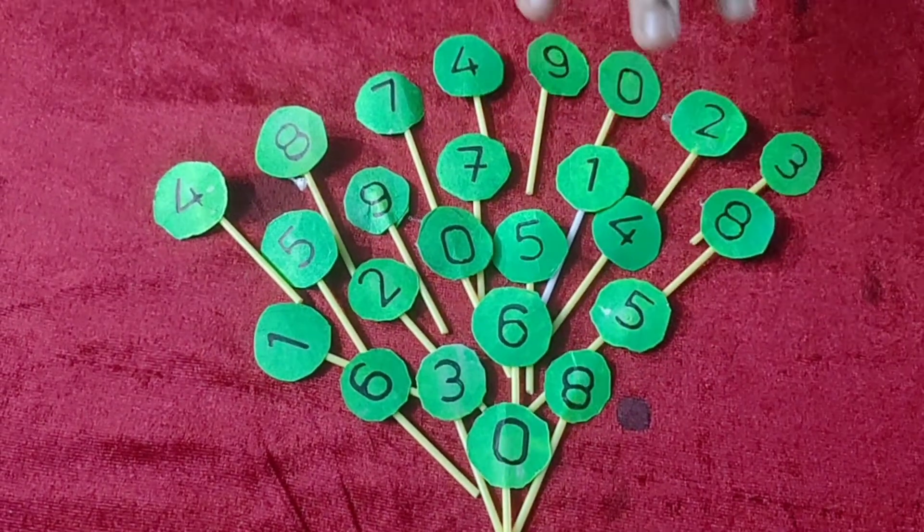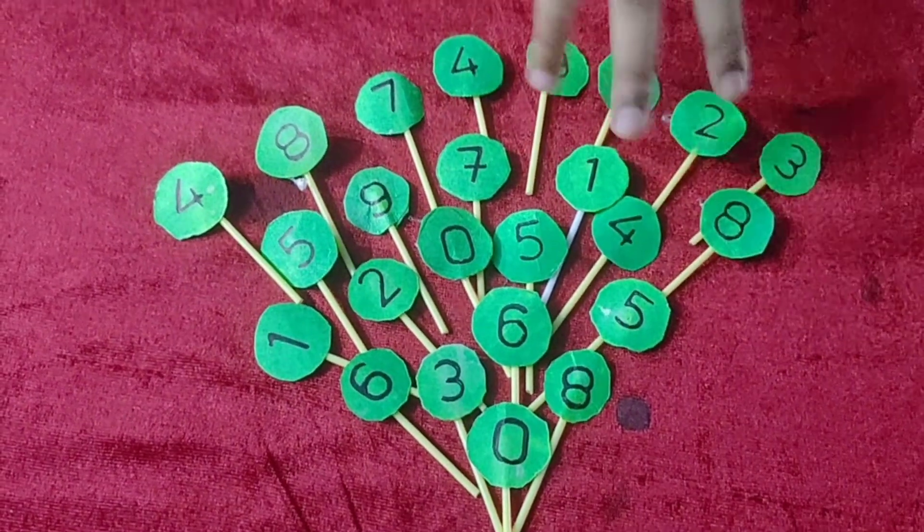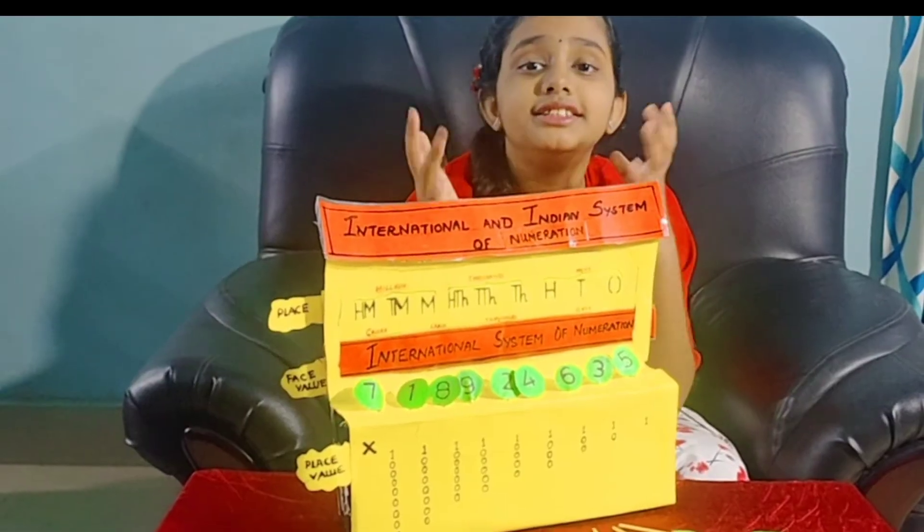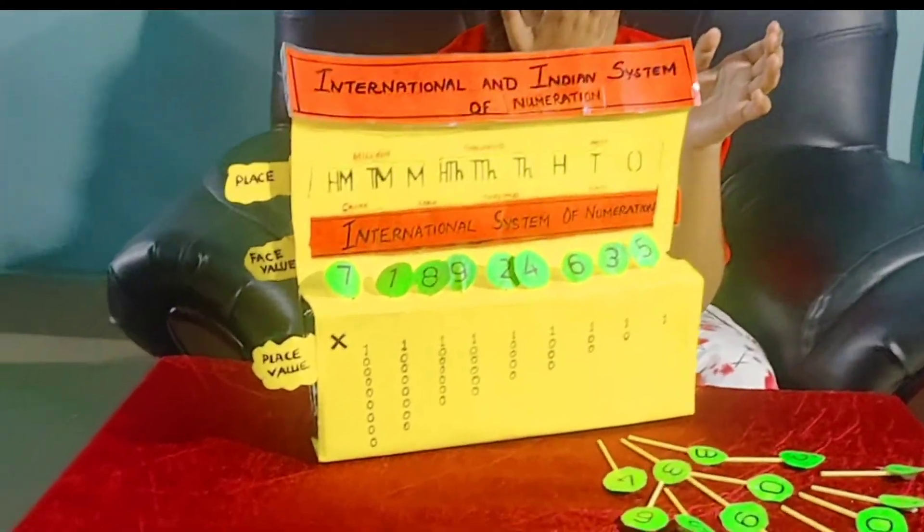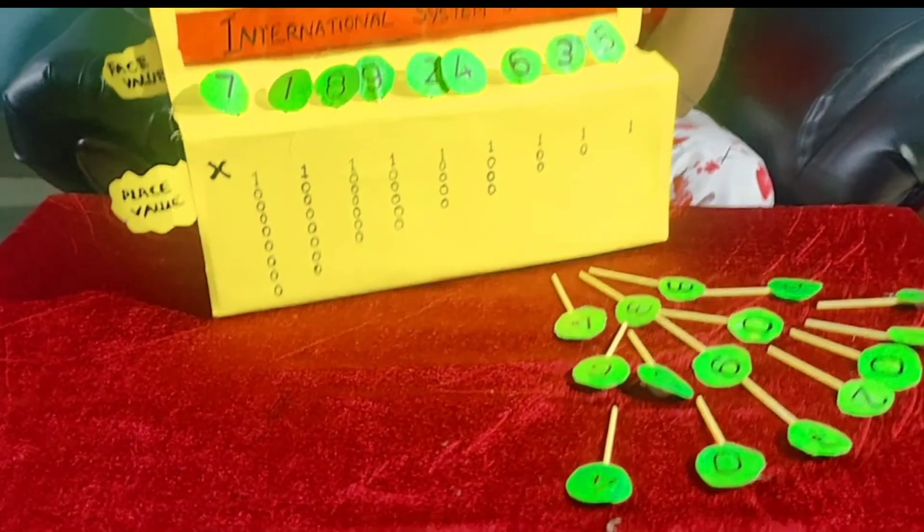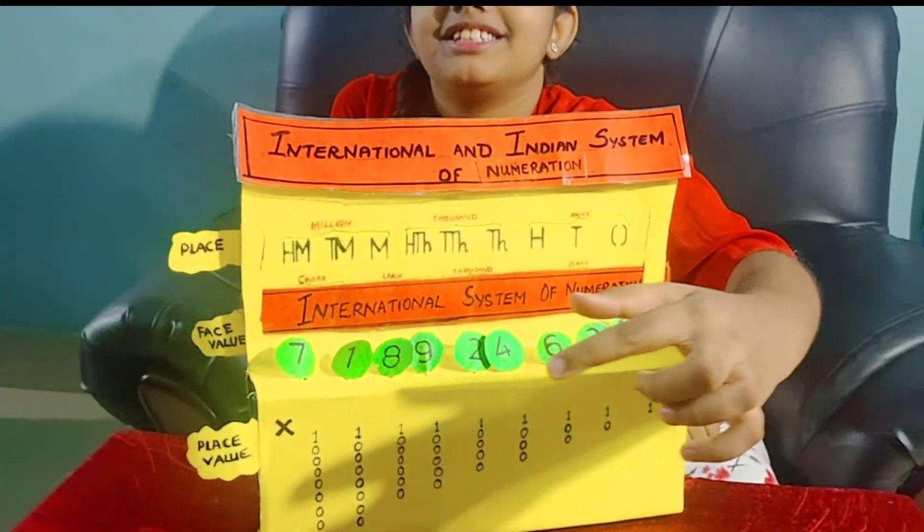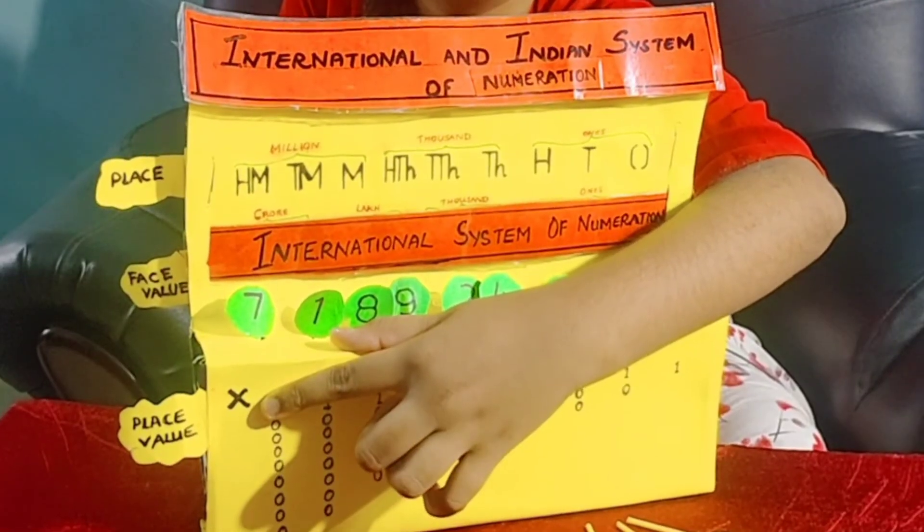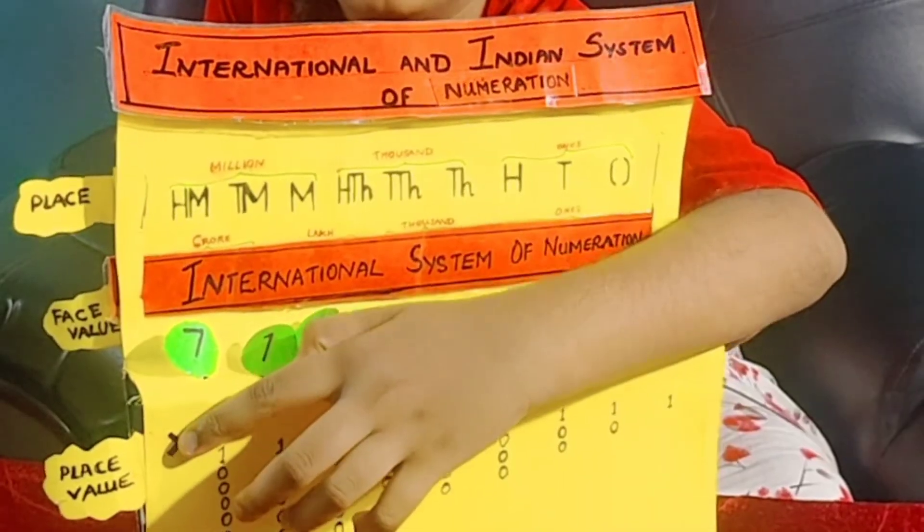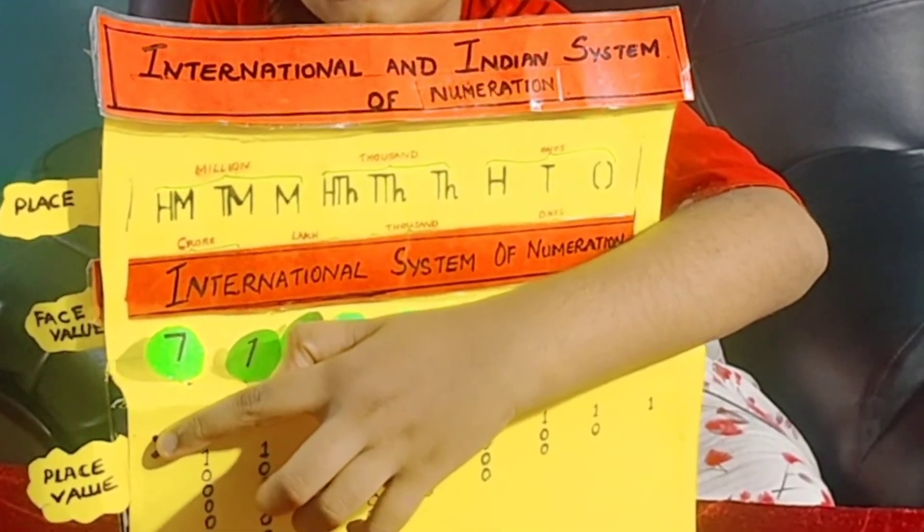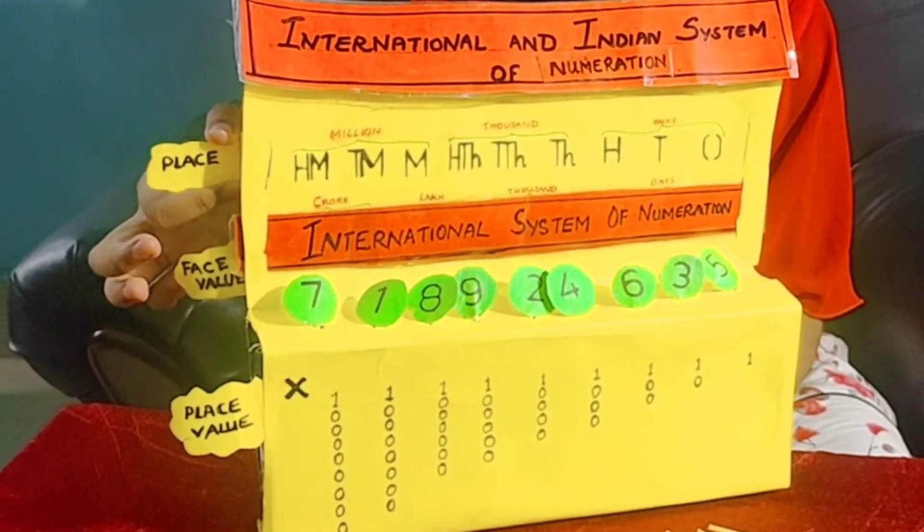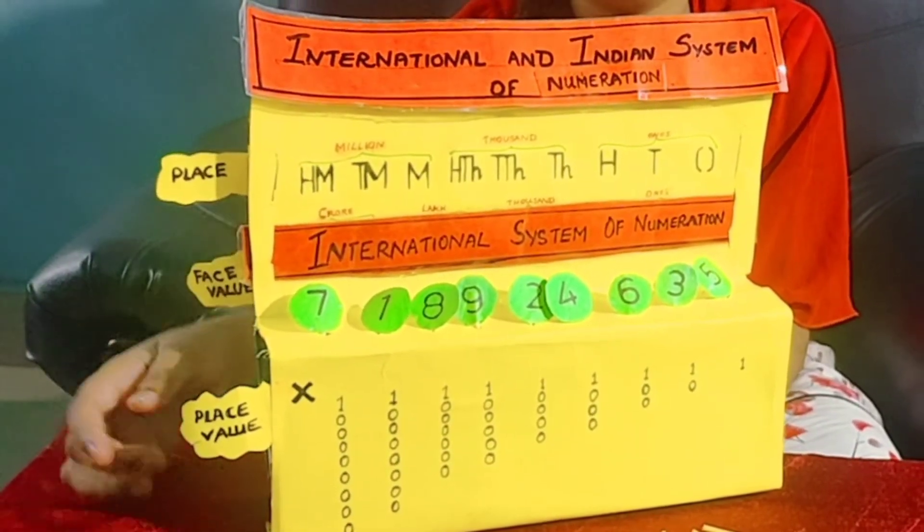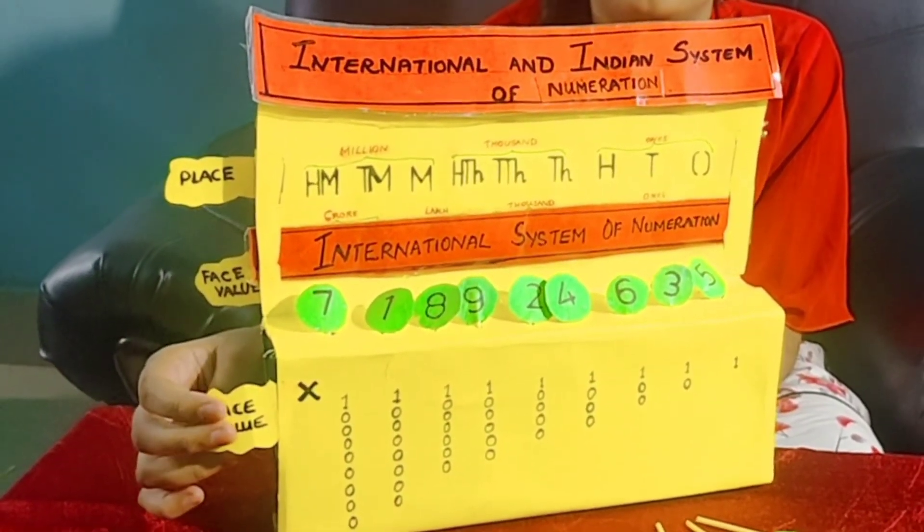Keep it to dry. Like this I have made so many numbers. Now this is the final look of our model. And I don't need to mark here, which I had explained in my previous video. I have also fixed place, face value and place value on the left side of the model.